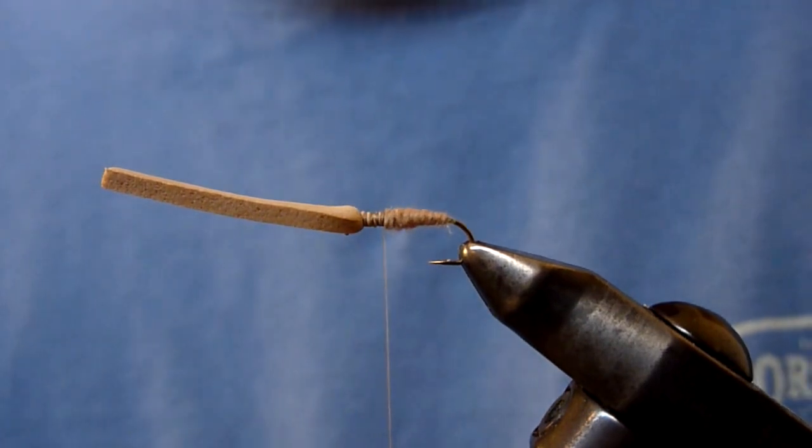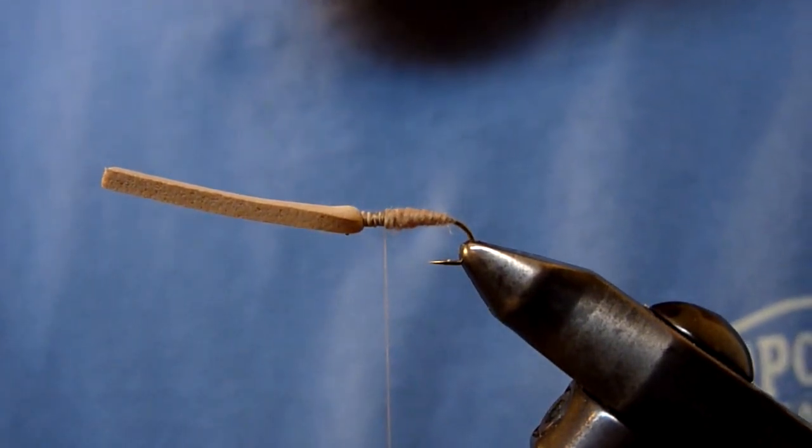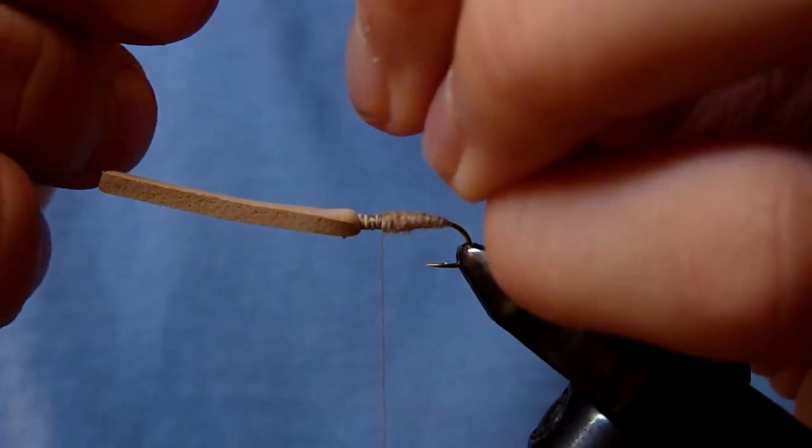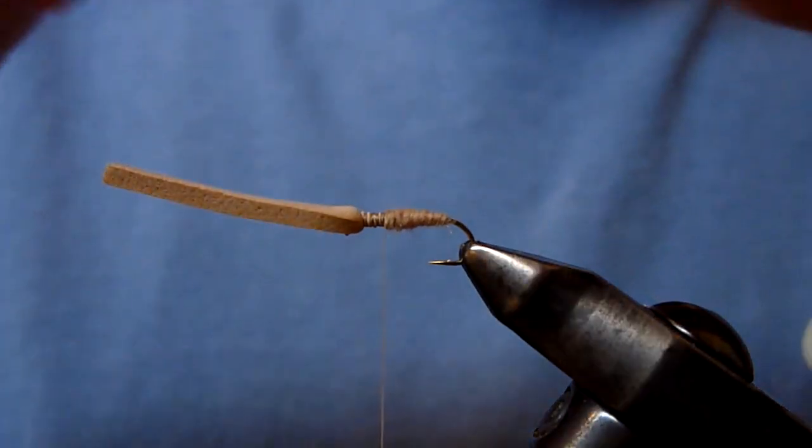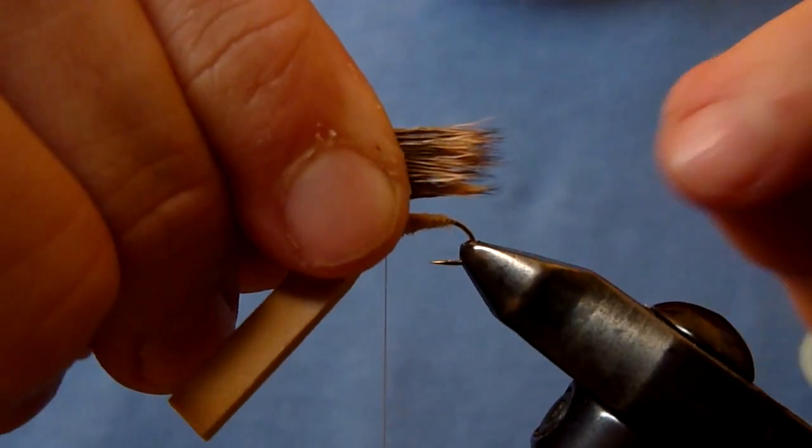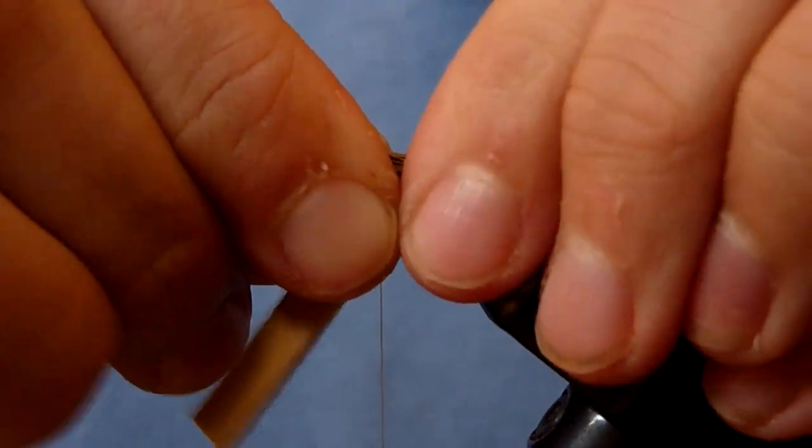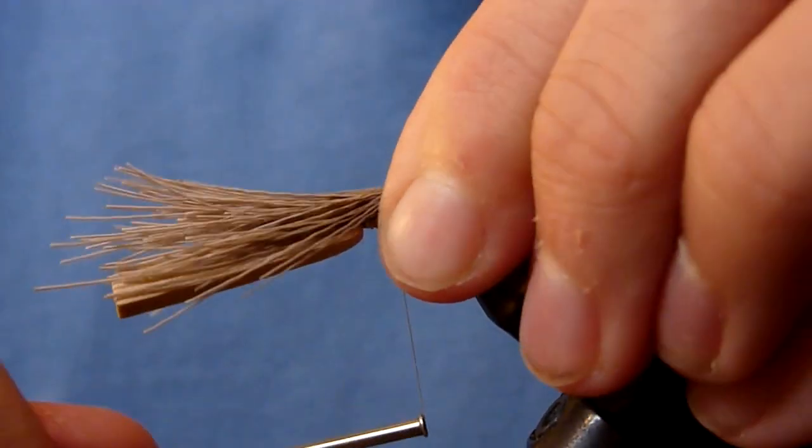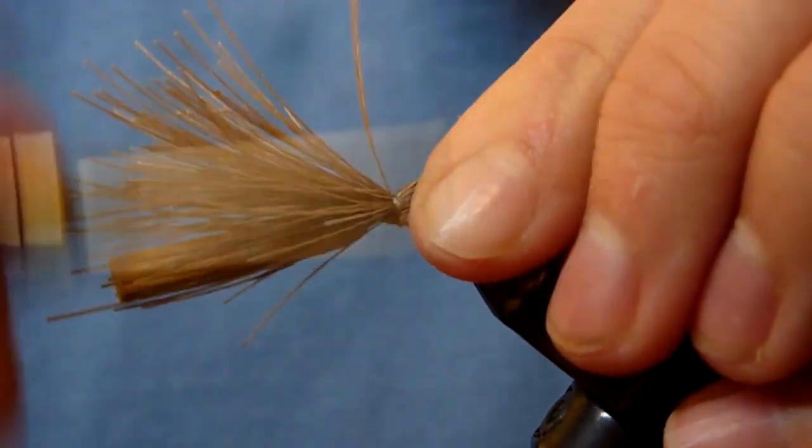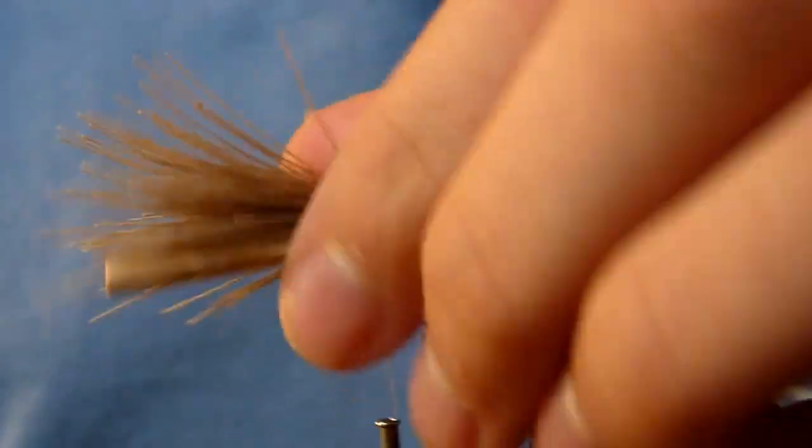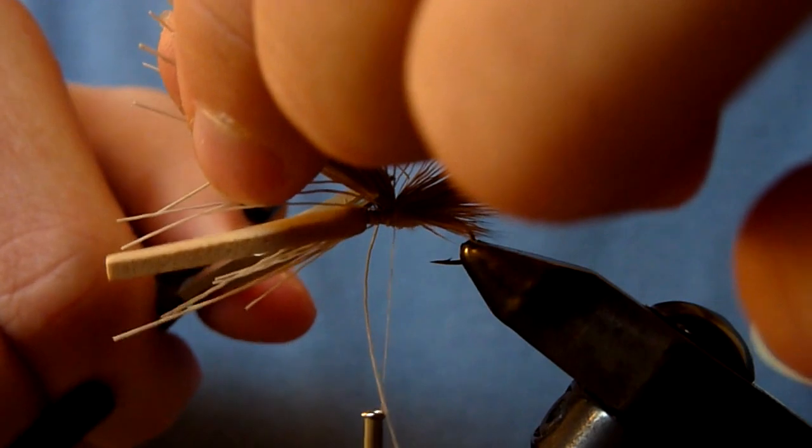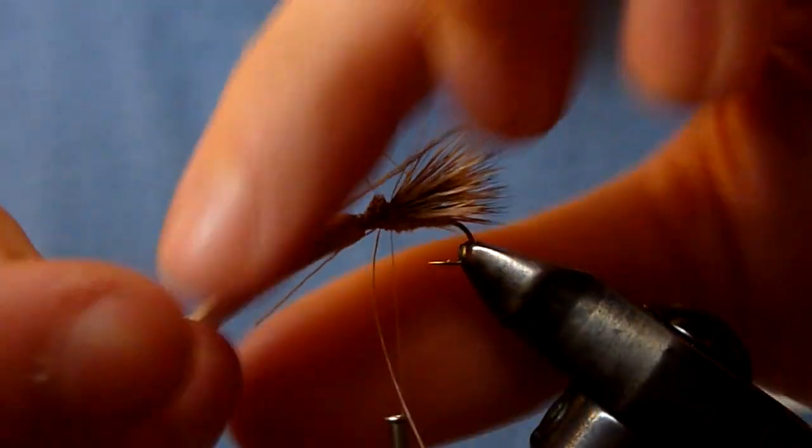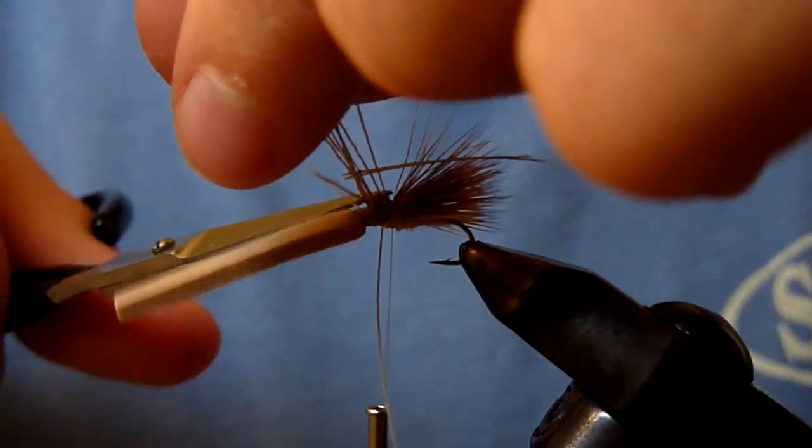I like a nice thick wing on my minis. Just got to work it in there. Take that out. Now I like the wing to extend just past the bend of the hook. About like that. Now we're going to come in. We're going to cut the butt ends. You can cut them pretty close because we're going to come in in a second with some super glue.